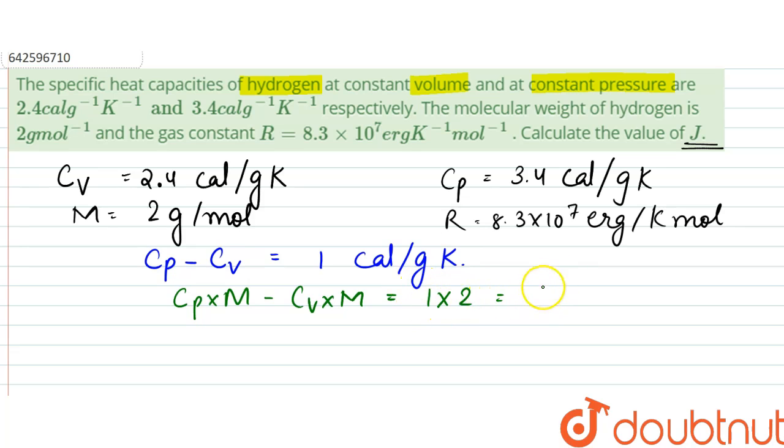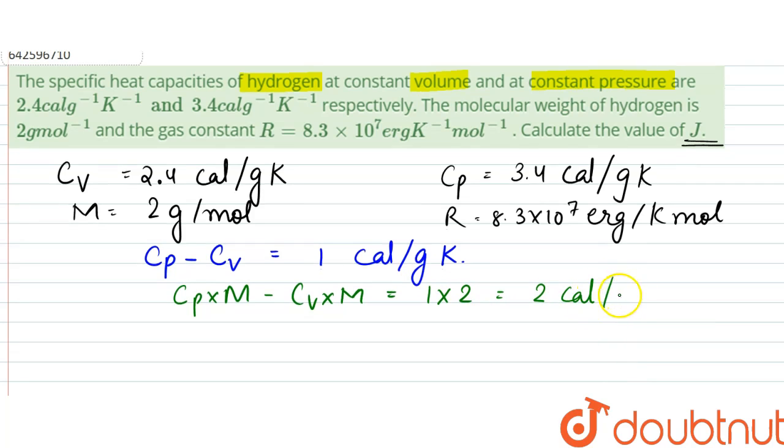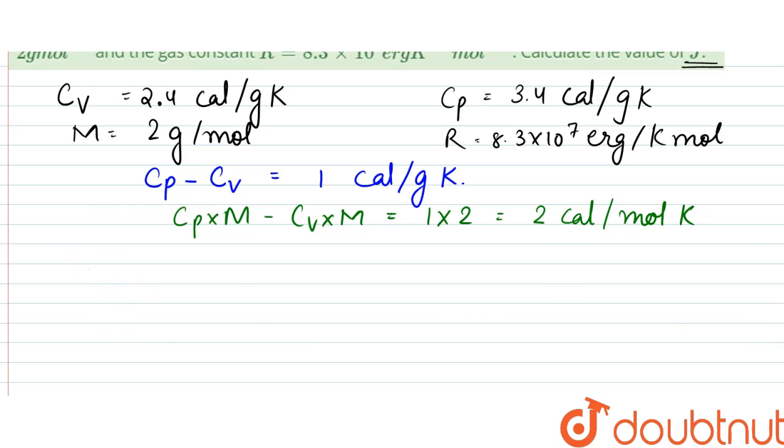2 calorie per mole Kelvin. So now we can write that 2 into J is equal to R. That implies that 2 into J is equal to 8.3 into 10 to power 7 erg per calorie per mole.